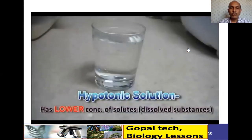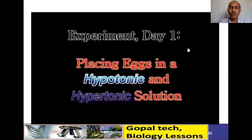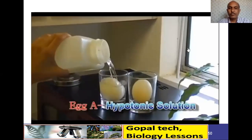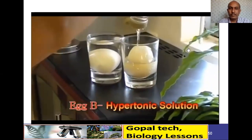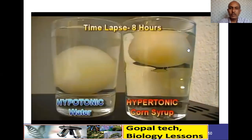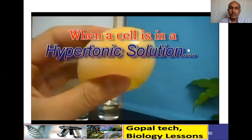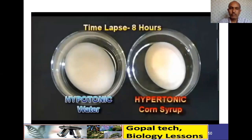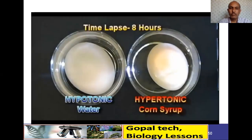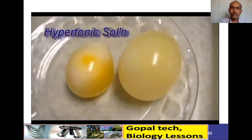Prepare one hypotonic solution and one hypertonic solution — you can add corn syrup, sugar, or salt. Place one egg in the hypotonic solution and another in the hypertonic solution. After eight hours, the egg swells in the hypotonic solution because water enters the cell, but shrinks in the hypertonic solution because water leaves the cell. Compare the difference in egg size.